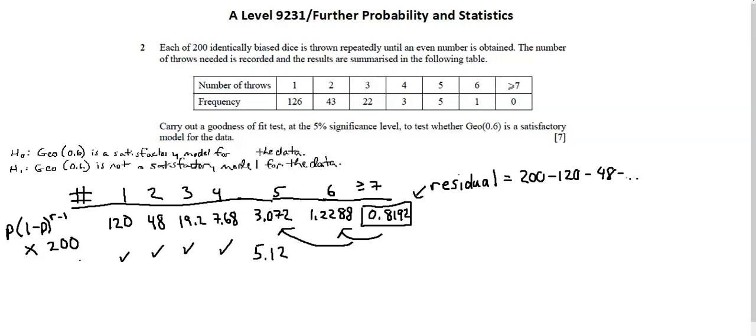I'm going to, from the table, bring down my actual frequencies. I have 126, then 43, then 22, then 3.